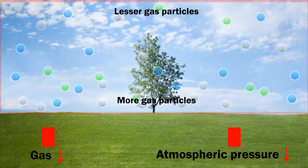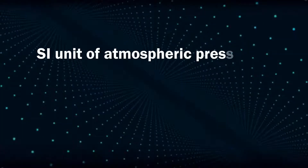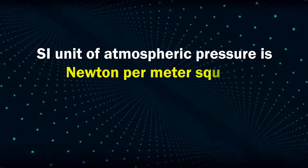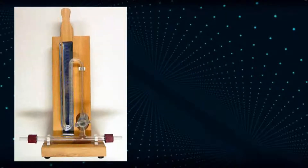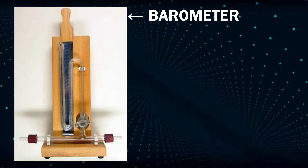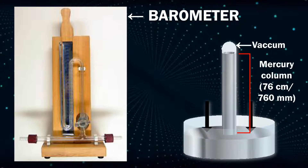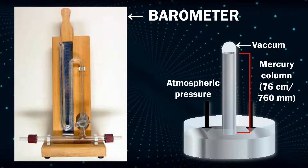Like other pressure, the SI unit of atmospheric pressure is Newton per meter square. In the case of atmospheric pressure, this SI unit is also called Pascal. Atmospheric pressure is measured with the help of a barometer. In a barometer, the height of the mercury column denotes the atmospheric pressure at that place at a given time, in millimeters of mercury.